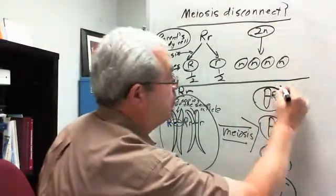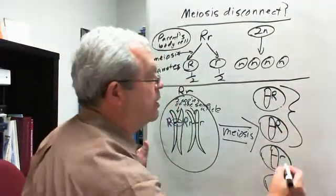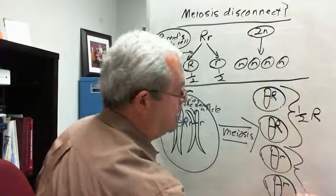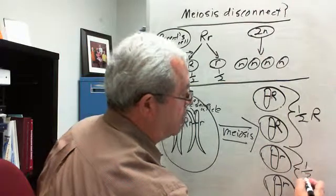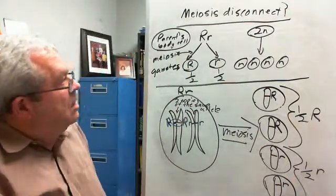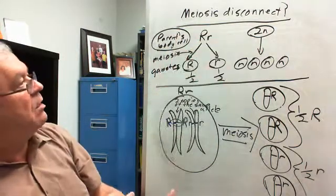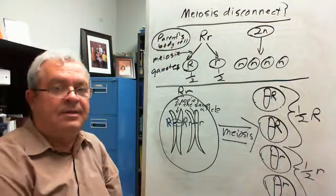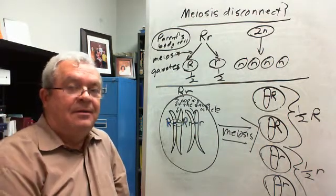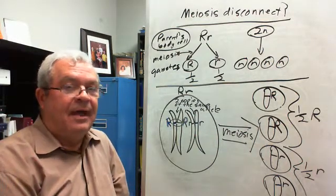That's what meiosis would do. So what fraction of these daughter cells get a big R? Two out of four, which is one half big R, right? All right. And so let's go back up to this drawing up here. Which one of these is the correct representation? Huh? Actually, what?